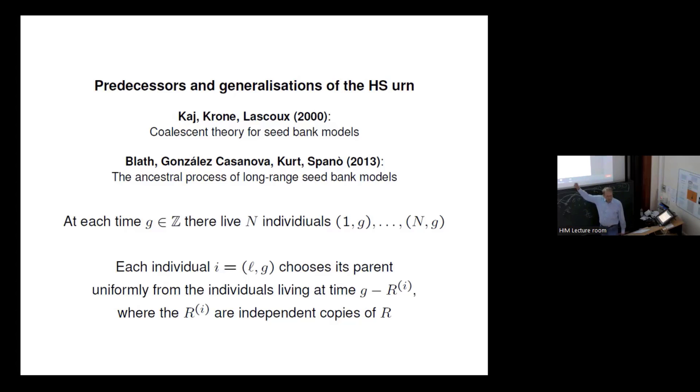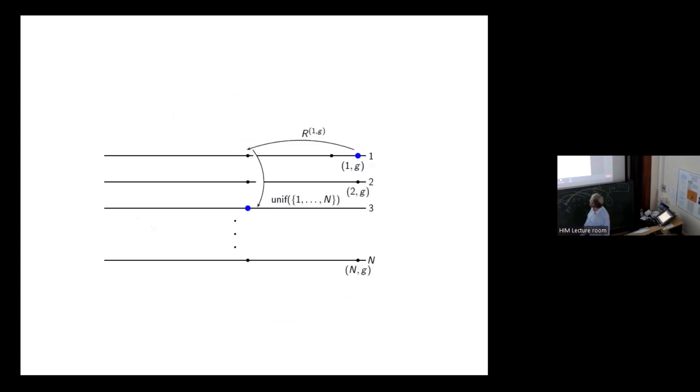And each individual i which is then named L and G chooses its parent in the very same way from a previous generation with the same power law search and chooses it uniformly from the individuals at that generation. So that's the picture, very similar to the one on the blackboard.